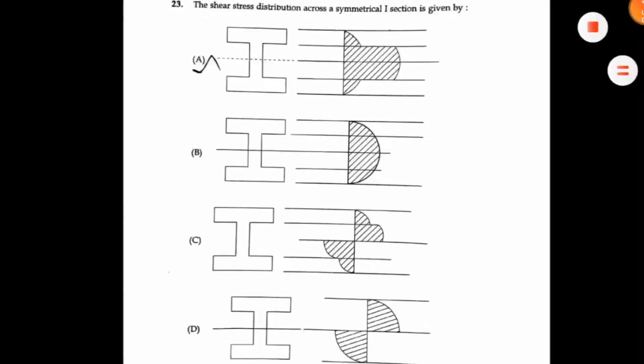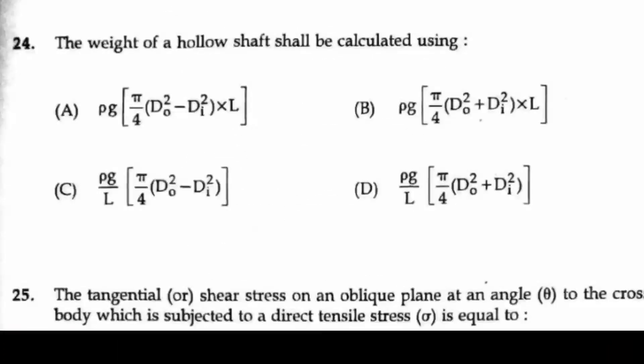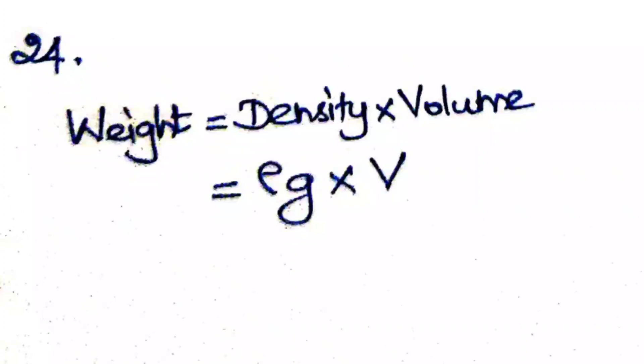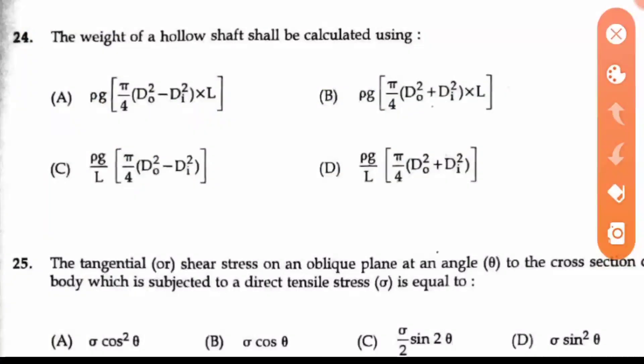Question 24: The weight of a hollow shaft shall be calculated using? Weight is density times volume. The density we can write as ρg, and the volume of the hollow shaft is (π/4)(D₀² - Dᵢ²)L. That is, the area times length gives your volume. So ρg(π/4)(D₀² - Dᵢ²)L will give your answer, where D₀ is the outer diameter and Dᵢ is the inner diameter. Option A is the right answer.